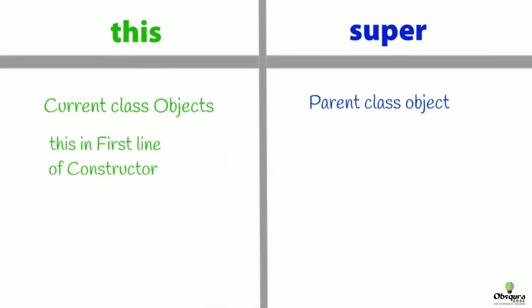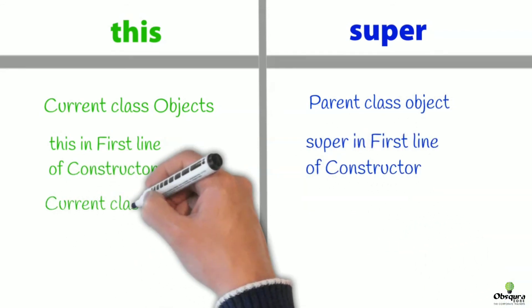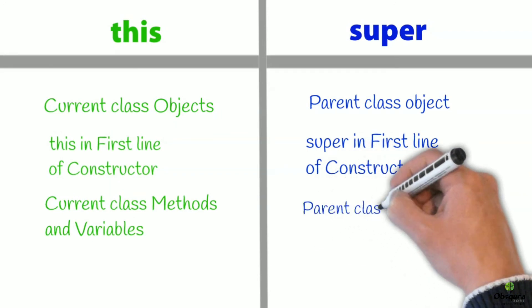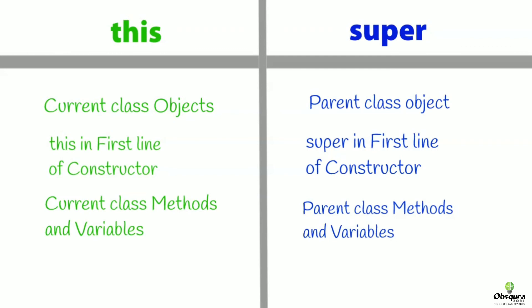This should be used in the first line of constructor. Super should be used in the first line of constructor. Can be used to invoke current class constructor. Can be used to invoke current class method. Can be used to invoke immediate parent class method.